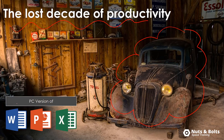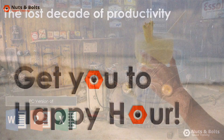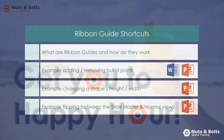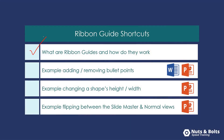So if you are on a PC version of Word, PowerPoint, and Excel, you want to put these into action immediately because they're going to help get you to happy hour. In this video, we'll look at what Ribbon Guides are and how they work. I'll show you an example of adding and removing bullet points using Ribbon Guides, which works in both Word and PowerPoint — a double-dipping keyboard shortcut. We'll look at an example changing a shape's height and width in PowerPoint, a clever trick for bouncing back and forth between the height and width input boxes, and an example flipping back and forth between the Slide Master and normal views in PowerPoint.